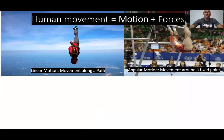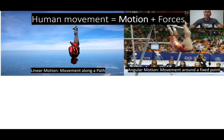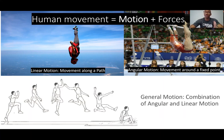Human movement is comprised of motion and forces. Motion can either be linear, which is movement along a particular path, or angular, which is movement around a fixed point. However, when we move, it's often a combination of both linear and angular motion.